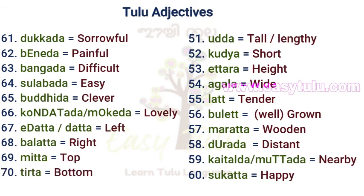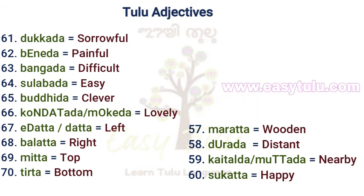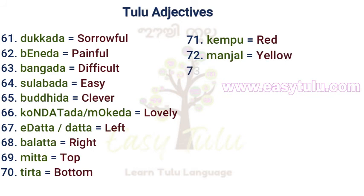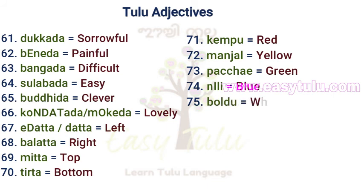Thiratha — Bottom. Kempu — Red. Manjal — Yellow. Pachay — Green. Neeli — Blue. Kapu — Black.